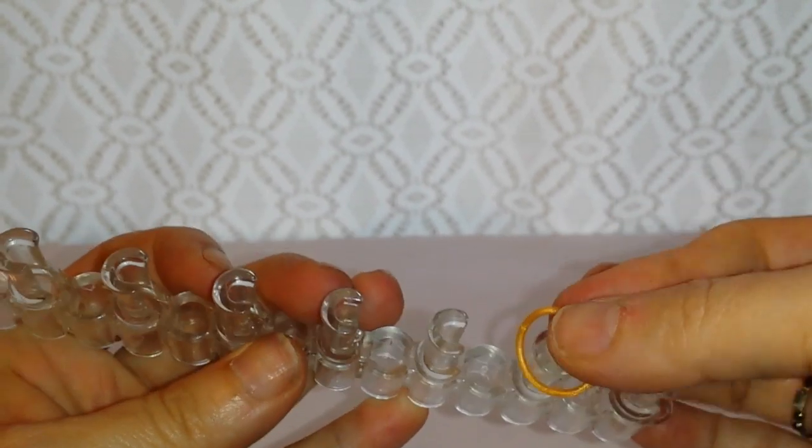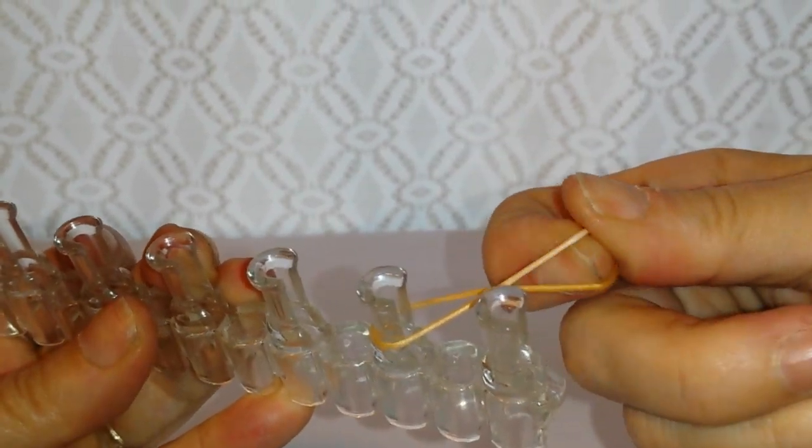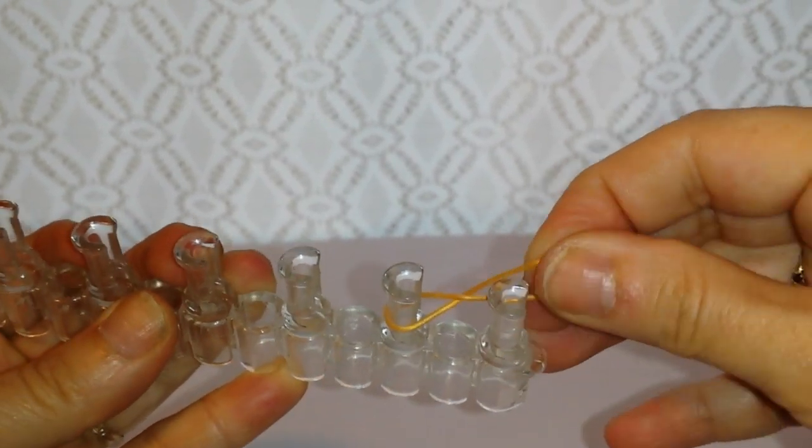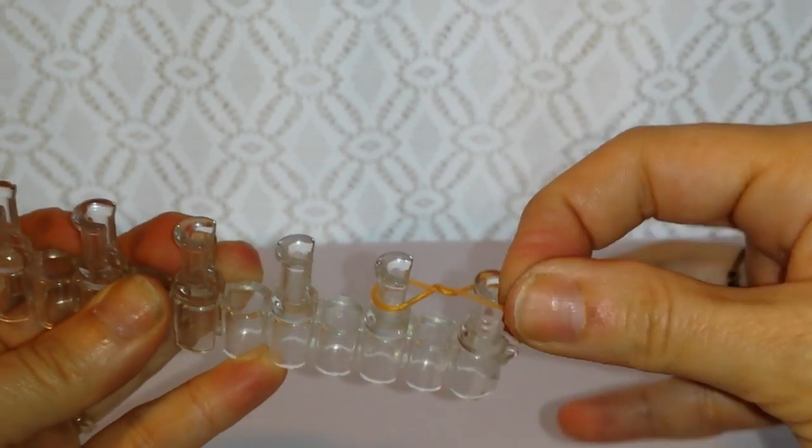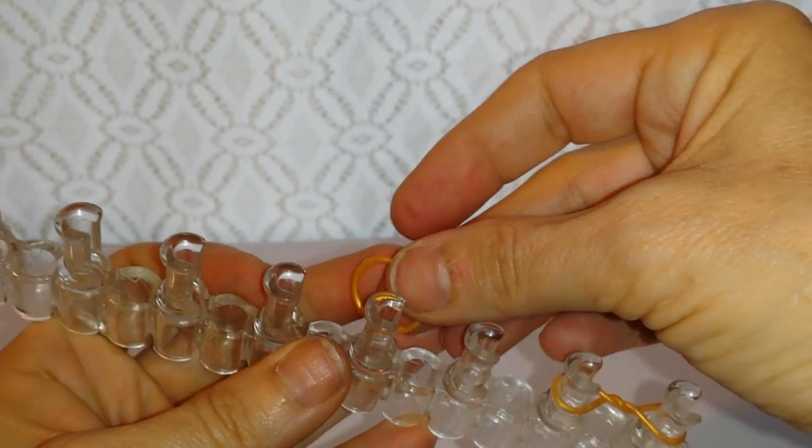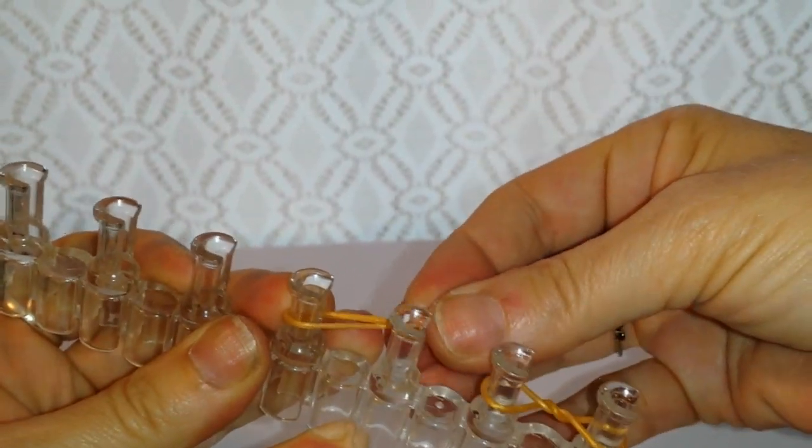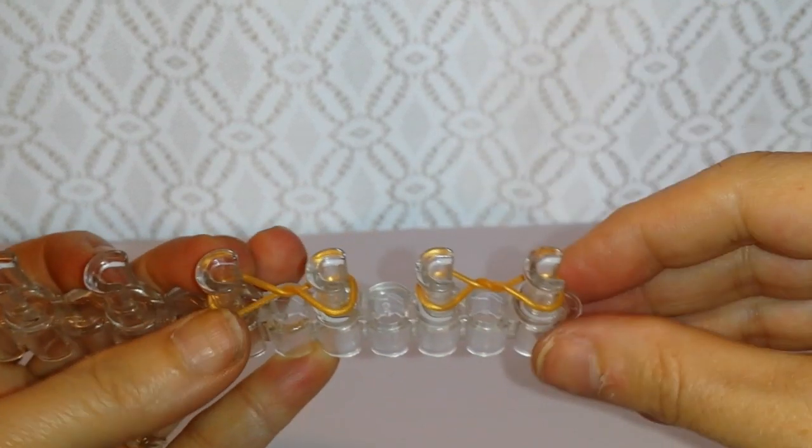We're going to get started. We start this bracelet by doing eights and my first row of eights I twist twice for this bracelet. So twist them two times.